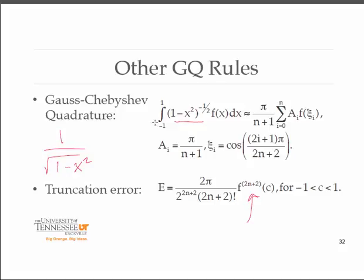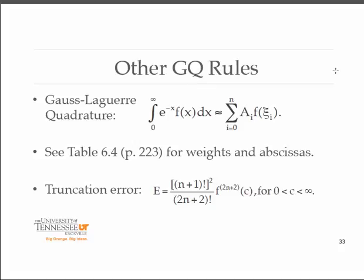Gauss-Laguerre quadrature has limits of integration 0 to infinity and weight function e to the minus x. If you're integrating something that has e to the minus x in front of it with some function of x, you can apply this quadrature rule. The weights and abscissas are all in the book around page 203. There's also the truncation error for that particular rule.